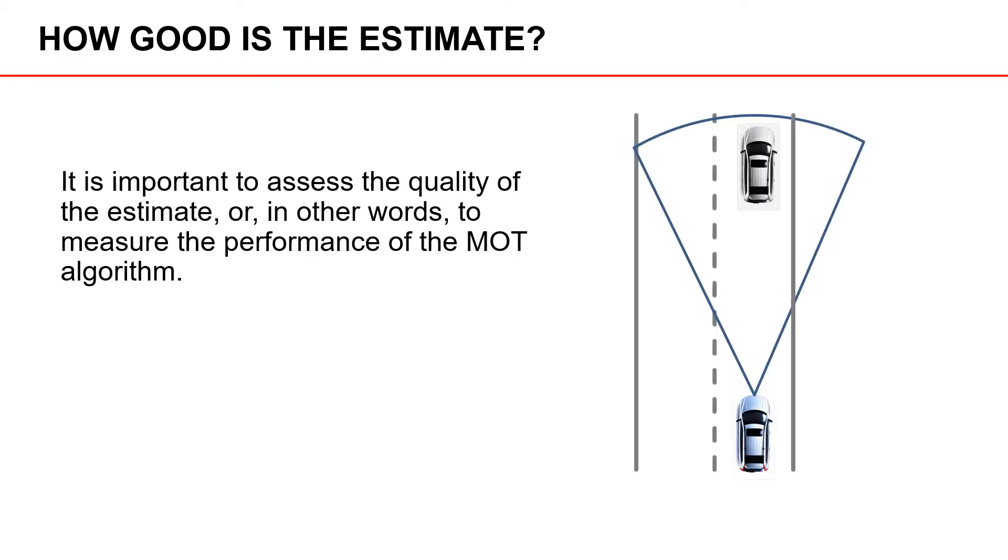We can illustrate this with an example. Let's consider an autonomous vehicle. It has some sensor with some field of view, and inside this field of view, there's a car where the true state is denoted by this cross sign.